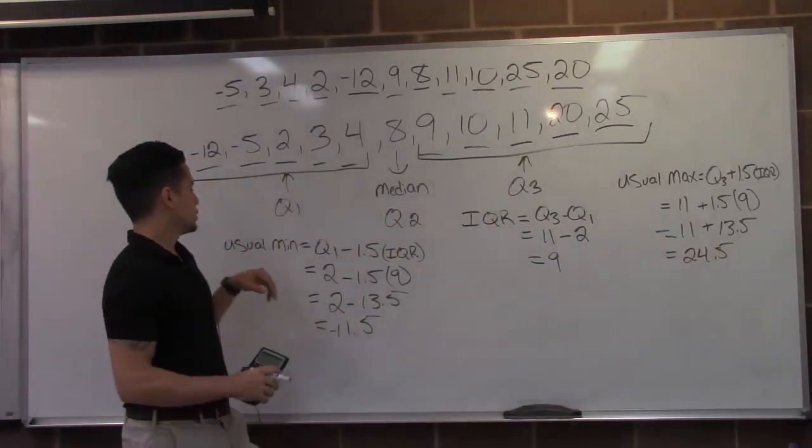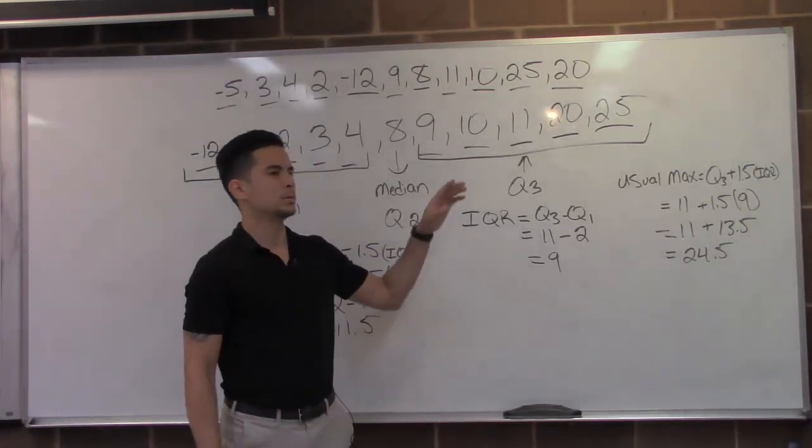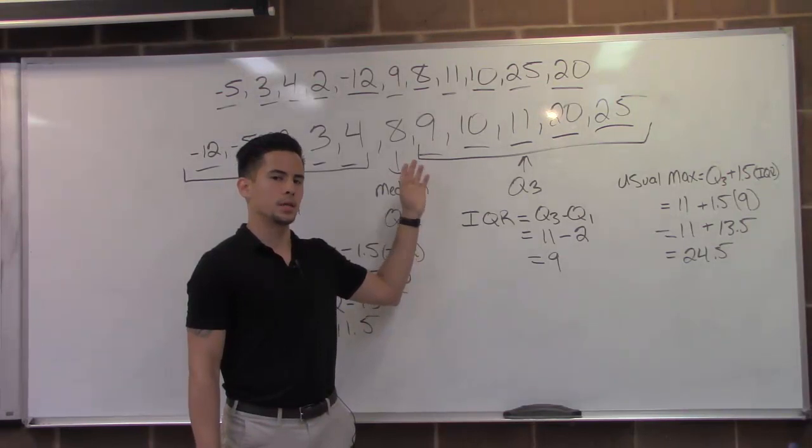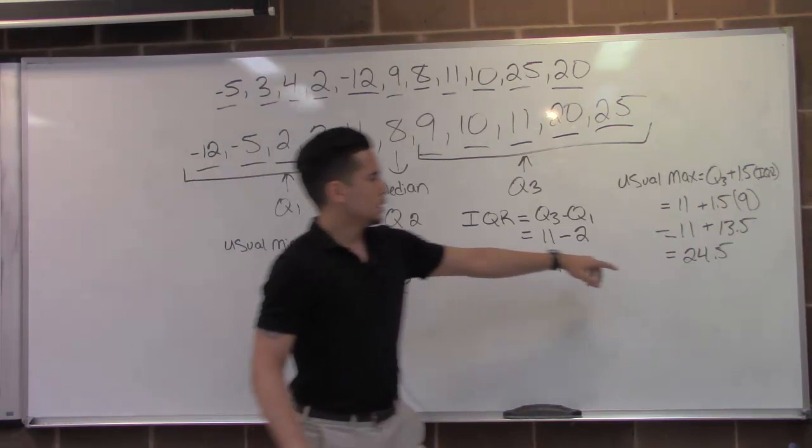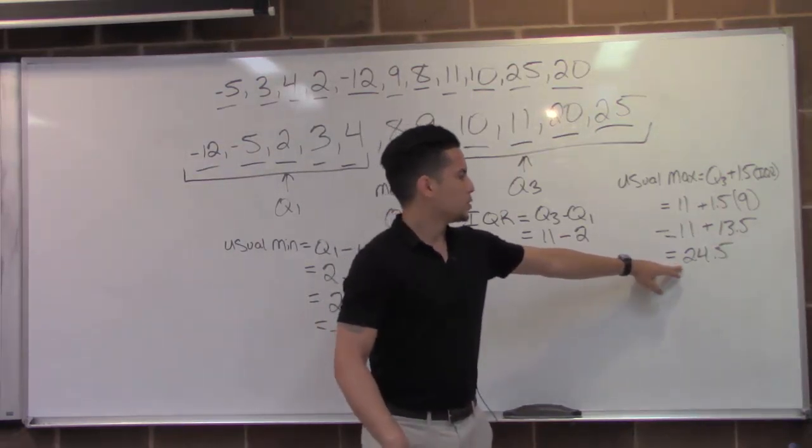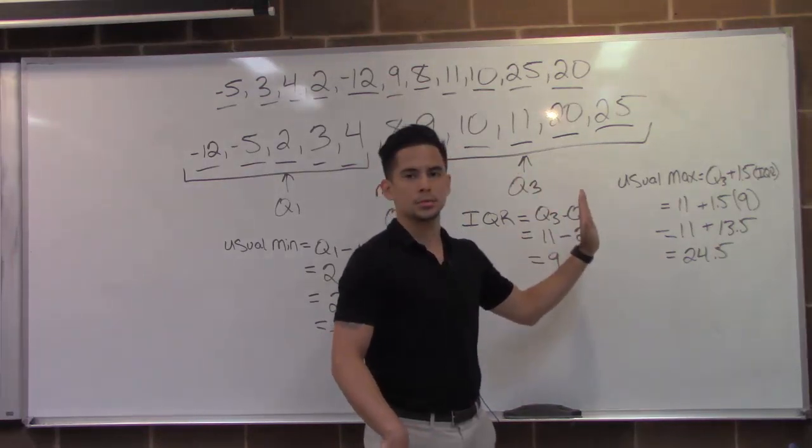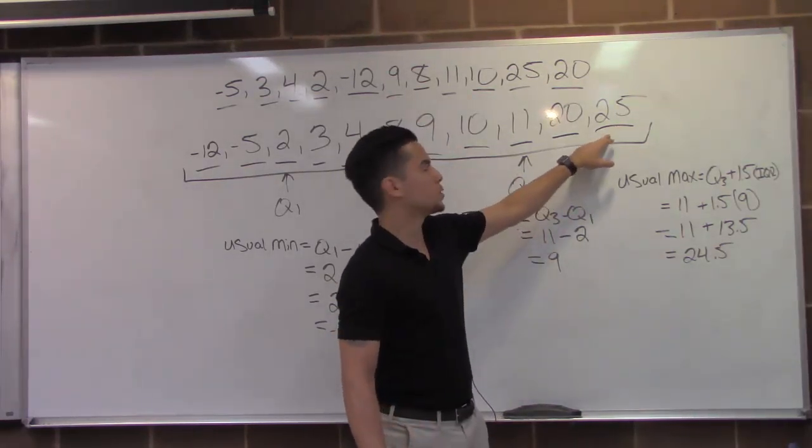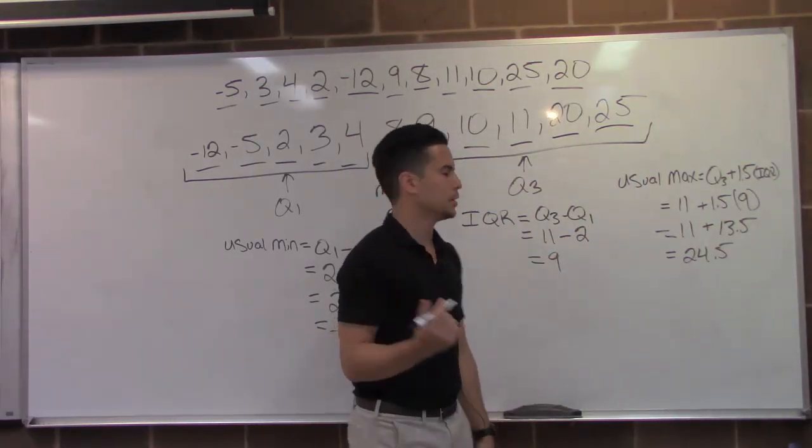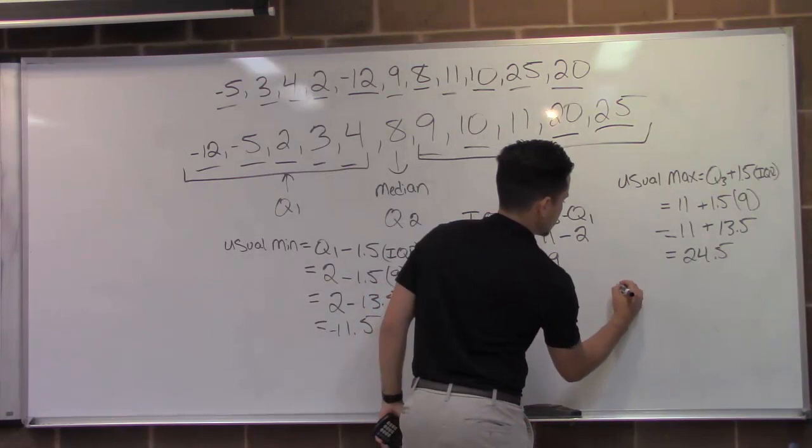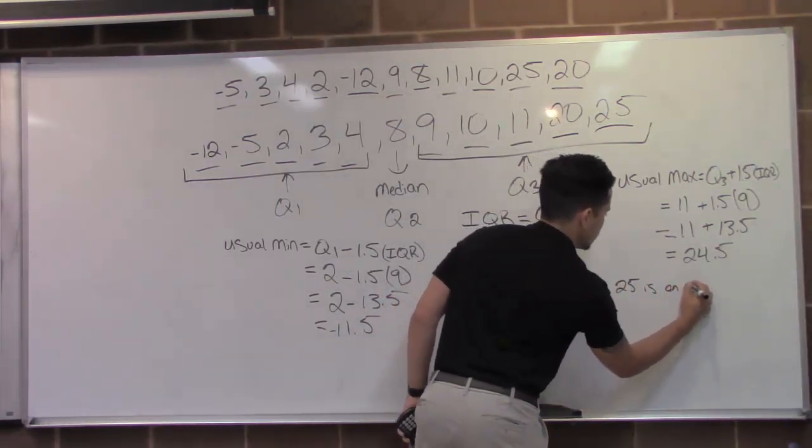So looking at our usual min and usual max, we can determine whether or not from our data, what numbers will be considered an outlier. From our data, 24.5 should be as high as the numbers go. And we can see that 25 is outside of that, so that's considered an outlier.